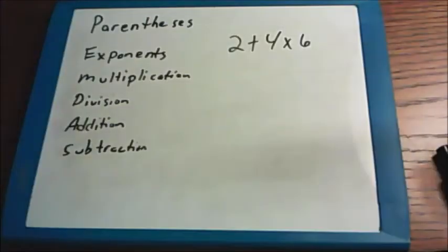Let's take this example and work it out with the order of operations as our guide. The first step we have to look for are parentheses, and in this question there aren't any. So we can skip on to the next step, exponents. And again, there are no exponents in this example.